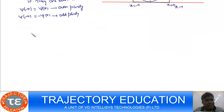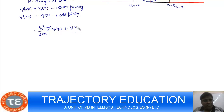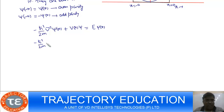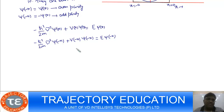I can prove this. According to the Schrödinger wave equation: minus h-bar squared over 2m times del-squared Psi(x), plus V(x) Psi(x), equals E Psi(x). If I replace x with minus x, then I get the same equation with Psi(minus x) and V(minus x), which equals E Psi(minus x).